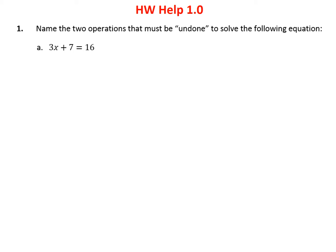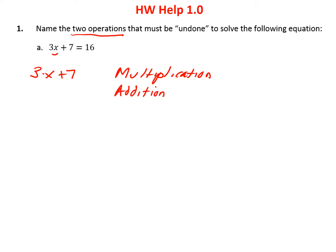In the first problem, it asks us to name two operations that must be undone to solve the following equation. We're solving the equation for x, so let's find our variable x and look next to it and see what operations are being done. We notice that x is being multiplied by 3 — we have 3 times x — so one operation we have to undo is multiplication. Also, after 3 times x, we add 7, so the other operation is addition.